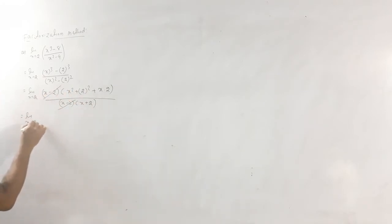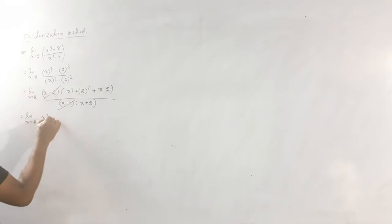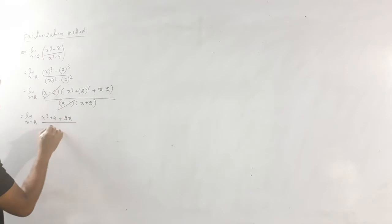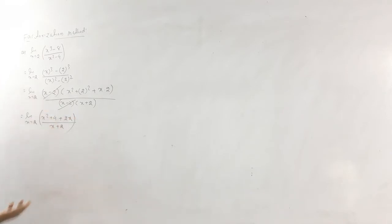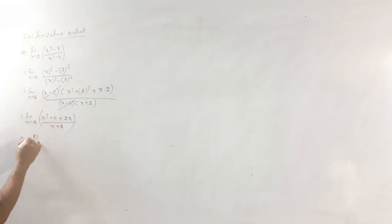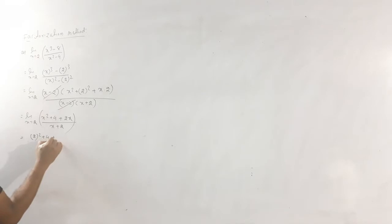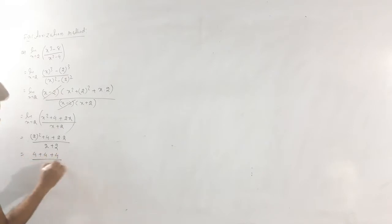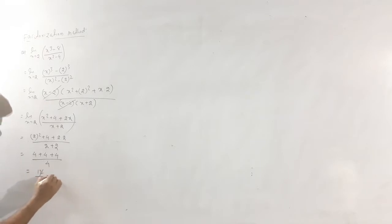The limit x tends to 2 of (x² plus 4 plus 2x) divided by (x plus 2). Substituting x equals 2: 2 squared plus 4 plus 2 into 2, divided by 2 plus 2, equals 4 plus 4 plus 4 divided by 4 equals 12 by 4. The result is 3. Complete.